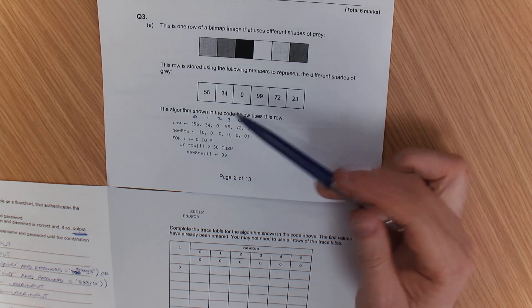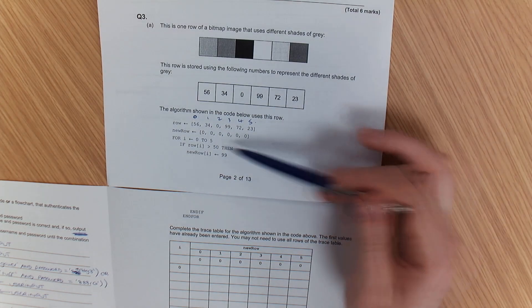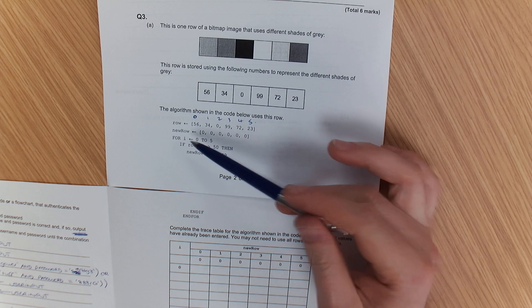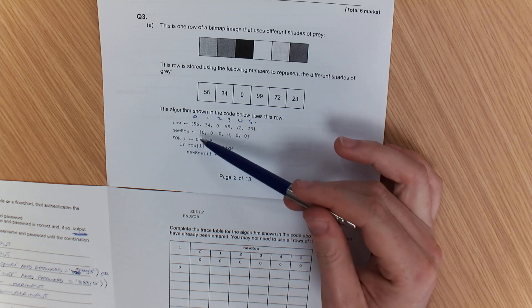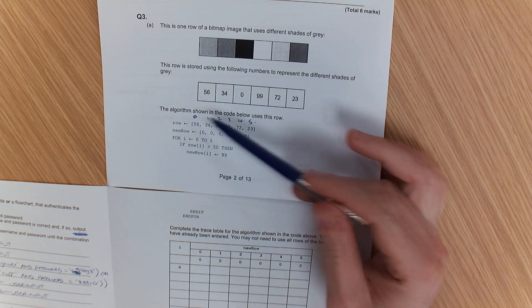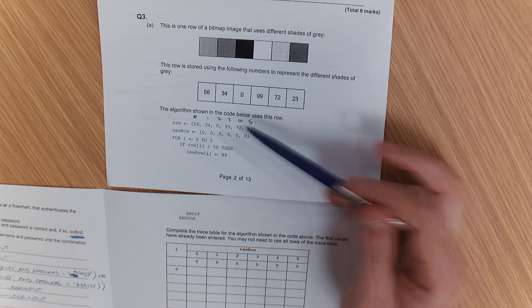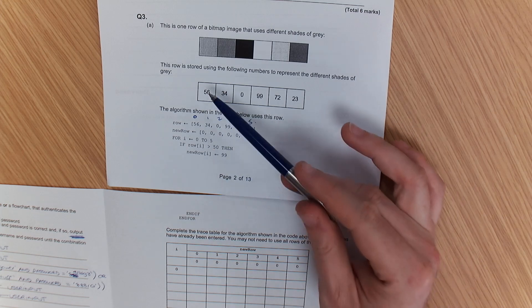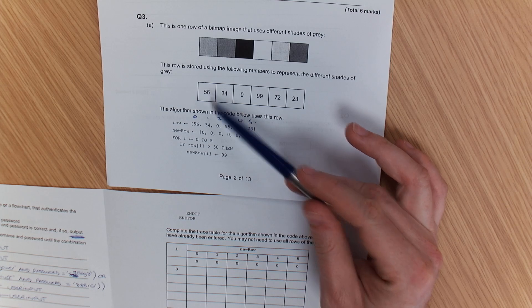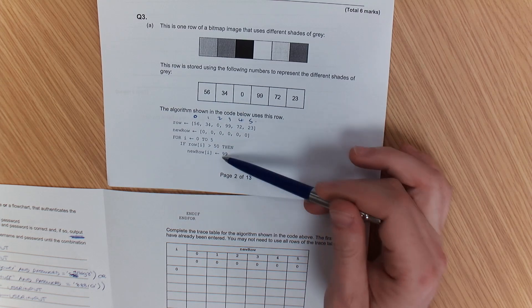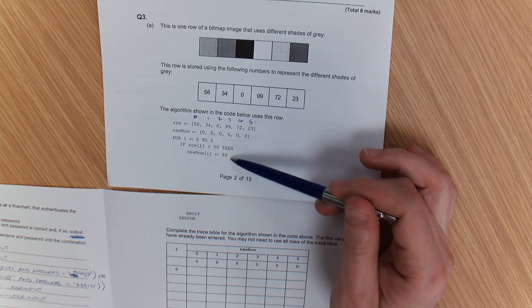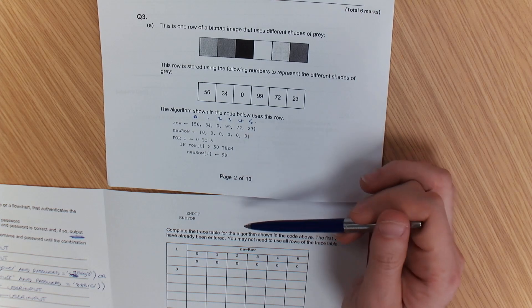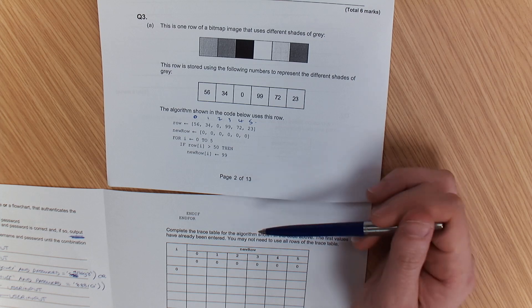So new row, there's a brand new row which is set up blank. Now, for i is 0 to 5, because my array is starting at 0 to 5. If row i is greater than 50, the new row becomes 99. So we're going to look at each iteration here.